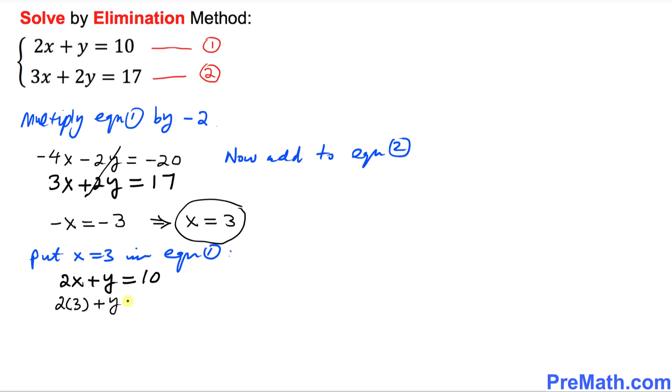So that's going to become 6 plus y equals 10. Move the 6 to the other side. So we get y equals 10 minus 6. That means y turns out to be 4.